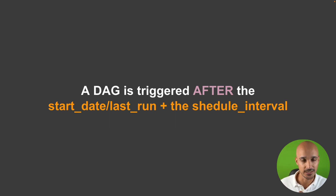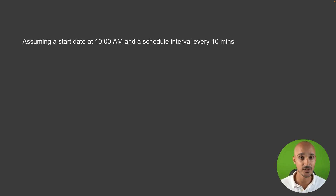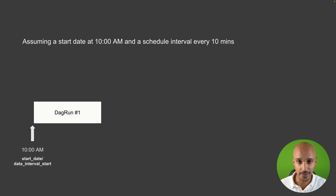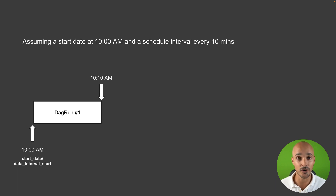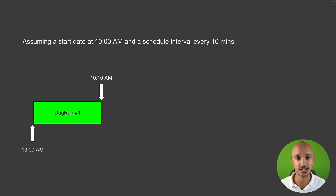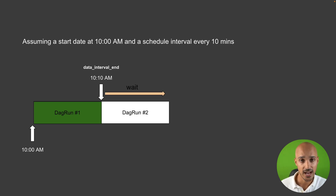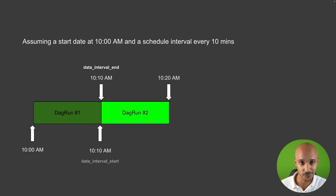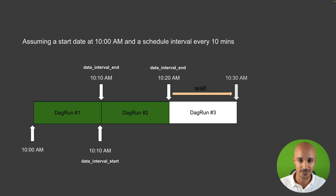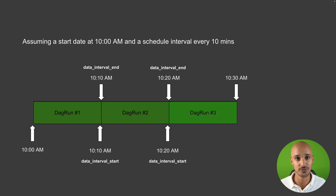What does it mean concretely? Let's imagine that you have a data pipeline that runs every 10 minutes starting with the date the 1st of January 2022 at 10 AM. So at 10 AM, nothing happens yet — you have the start date, or the data interval start. The scheduler waits 10 minutes as defined in the schedule interval, and then it is at 10:10 AM that the scheduler runs the first DAG run. For the first DAG run, you end up with a data interval start at 10 AM and a data interval end at 10:10 AM. Same thing for the second DAG run — the scheduler waits 10 minutes and at 10:20 AM it runs the second DAG run, with data interval start at 10:10 AM and data interval end at 10:20 AM. Same thing for the third DAG run: at 10:30 AM it runs, with data interval start at 10:20 AM and data interval end at 10:30 AM.